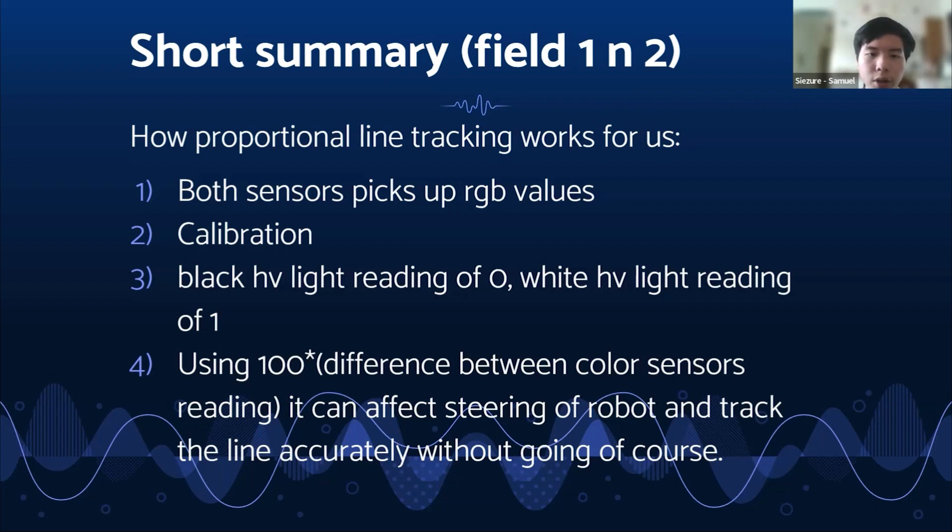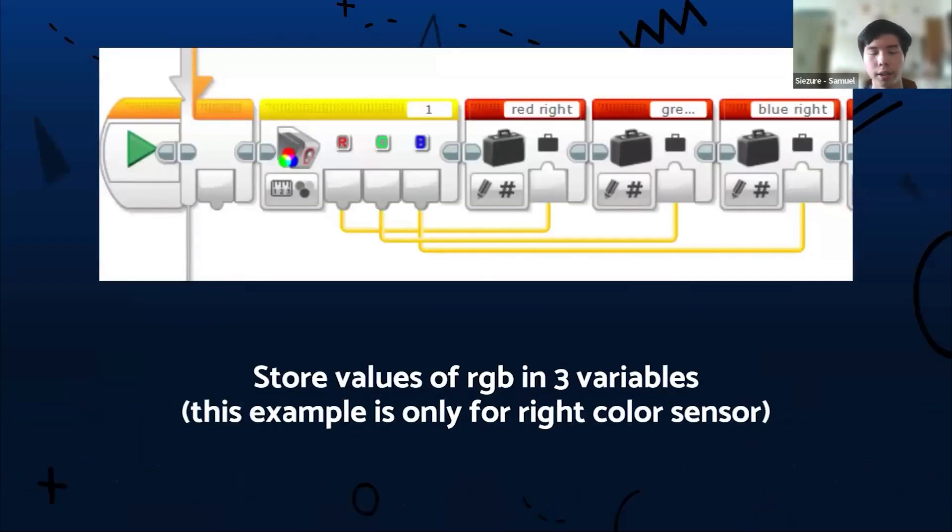By using 100 multiplied by the error between the color sensors reading, it's able to control the steering of how the robot will travel during the line track and it will not go off course. It stores the value of the RGB in three variables. However, this is only for the right sensor because we are using two sensors, so there will be six variables in total to store the values.